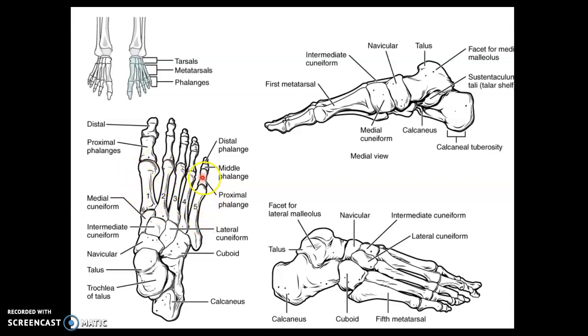Distal to the metatarsals, we have 14 phalanges, just like we did in the hand, with proximal, middle, and distal phalanx on each digit, except for the big toe that only has two phalanges, a proximal and a distal.